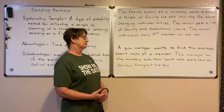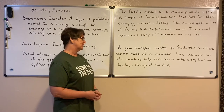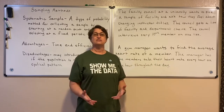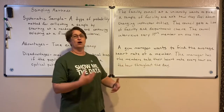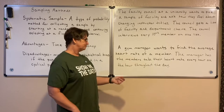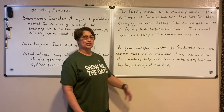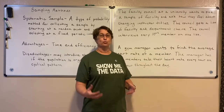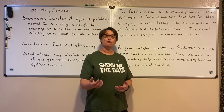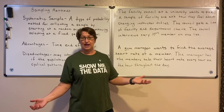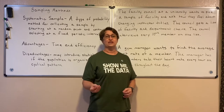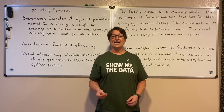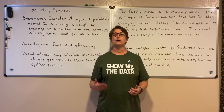Here's another example. A gym manager wants to find the average heart rate of members. The manager has members take their heart rate every hour on the hour throughout the day — that's the system or pattern in place. But again, the gym manager needs to look for cyclical patterns. For instance, maybe every hour on the hour is when classes start, so people haven't been working out yet and their pulse rate would be lower than it would be later in the hour. They need to watch for those types of things and make adjustments to ensure a good representation. So with a systematic sample, we just have some sort of system or pattern in place to help us choose the sample.